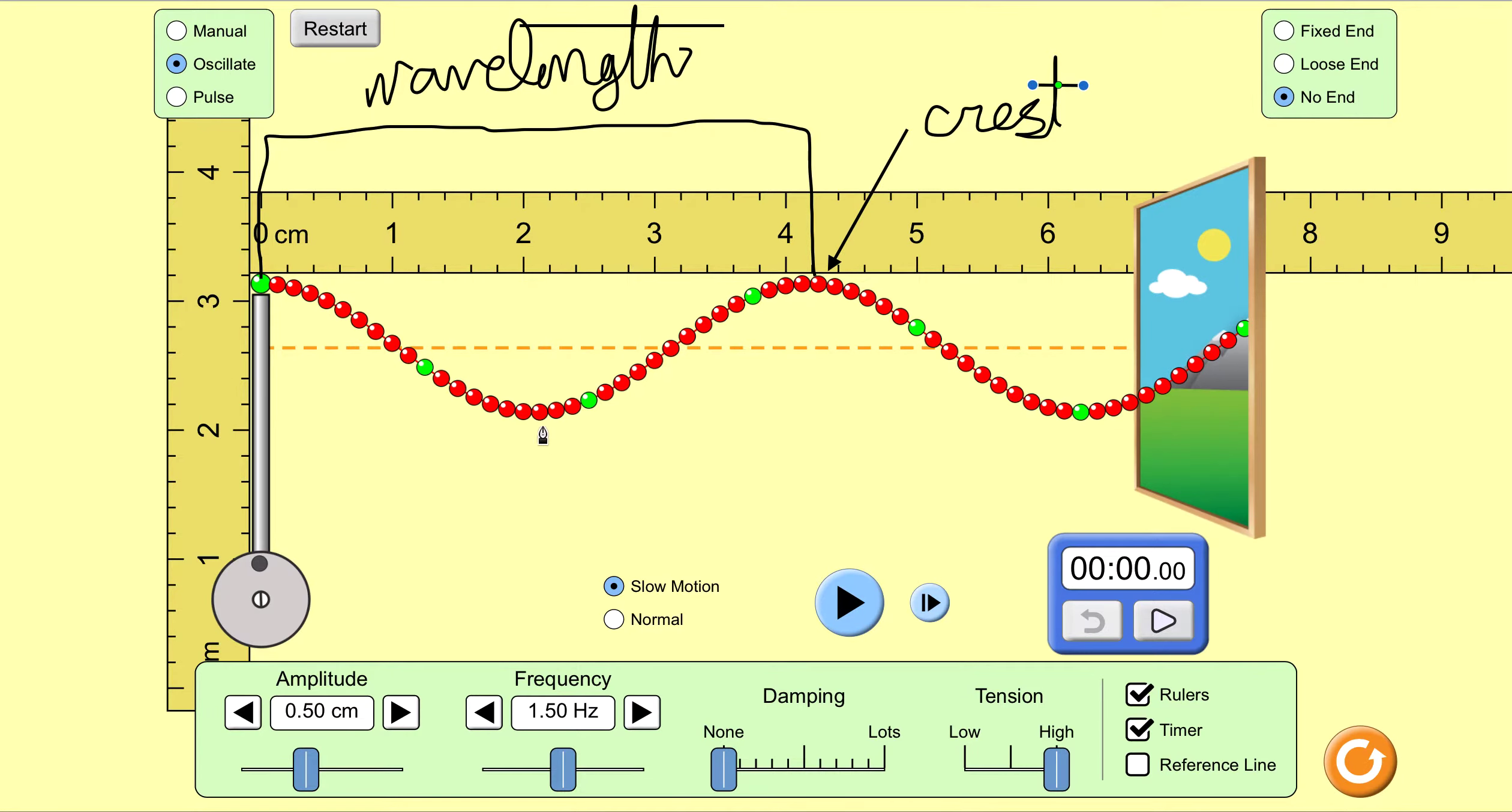And the opposite of the crest, that weird looking word, trough. T-R-O-U-G-H. Trough, that's the bottom of the wave.